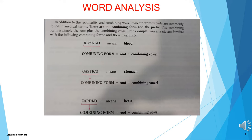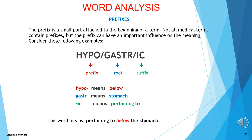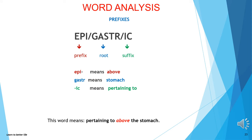Let's learn the prefix next. The prefix is a small part attached to the beginning of a term. Not all medical terms contain prefixes, but the prefix can have an important influence on the meaning. For example, hypogastric: hypo- means below, gastr- means stomach, and -ic means pertaining to — so this word means pertaining to below the stomach. Next: epigastric — epi- means above, gastr- means stomach, and -ic means pertaining to — meaning pertaining to above the stomach.